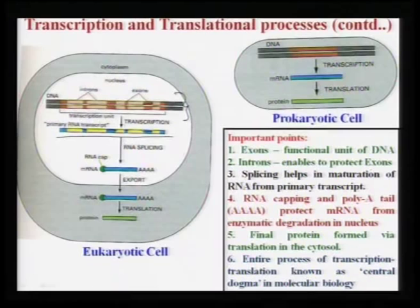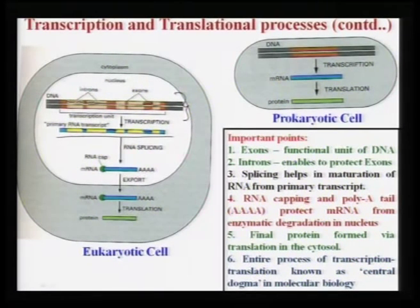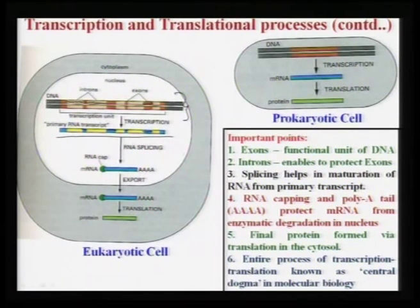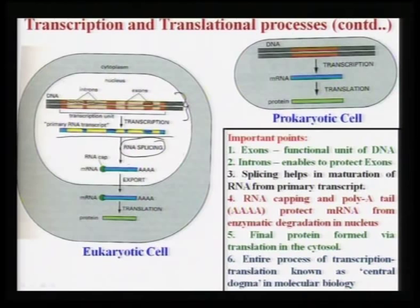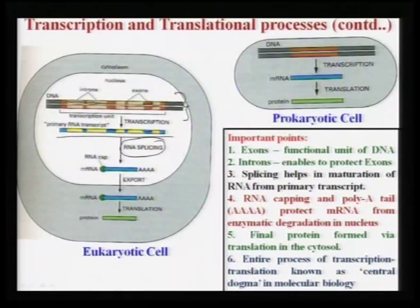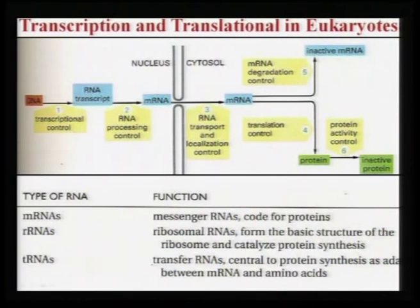Introns are non-coding sequences in DNA that protect the exons. Once transcription makes the primary RNA transcript, it undergoes further biochemical processing known as splicing. Splicing converts the primary RNA to mRNA — messenger RNA. There are three types of RNA: mRNA codes for proteins, carrying the code for the amino acid sequence that will be formed outside the nucleus.